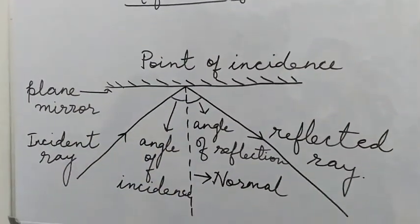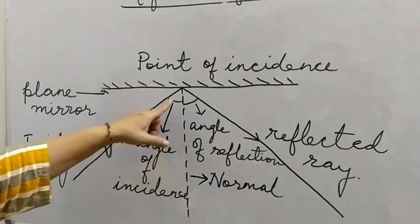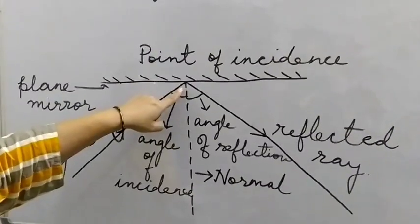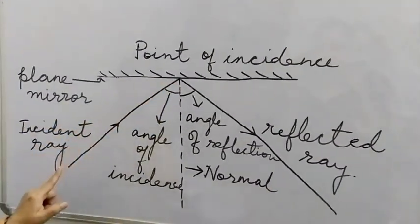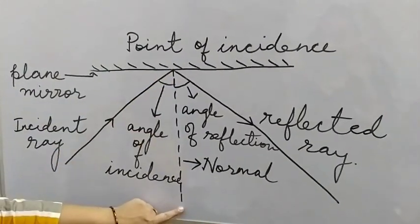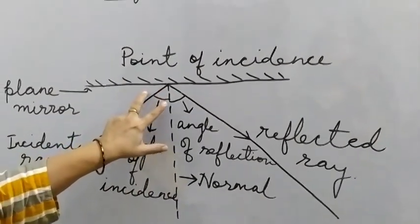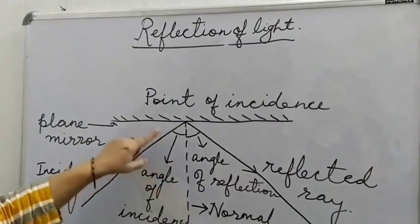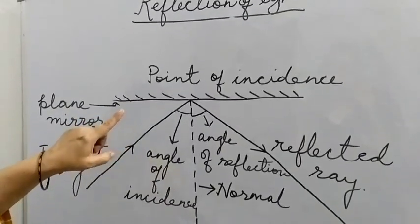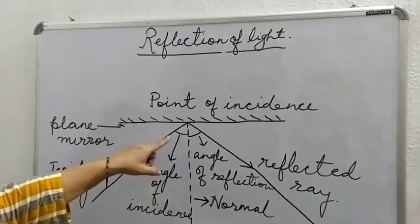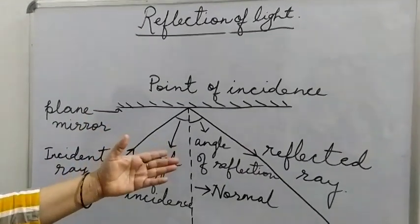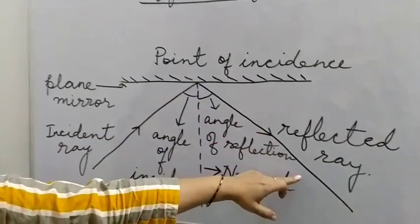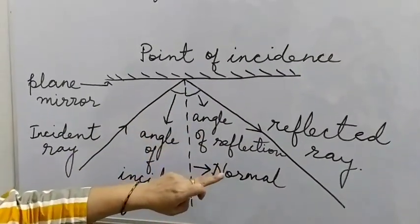Now angle of incidence — the angle formed between the incident ray and the normal is known as the angle of incidence. And in the same way, the angle of reflection is the angle between the normal and the reflected ray.